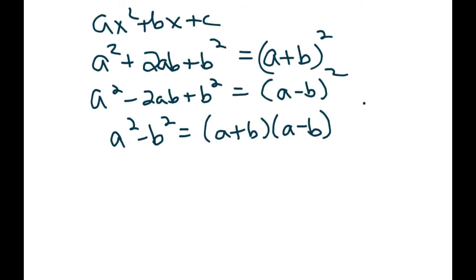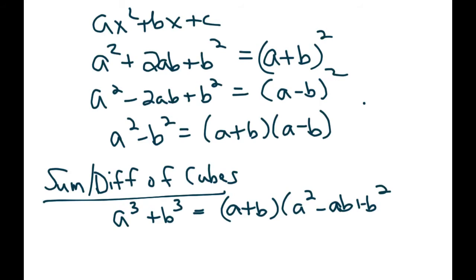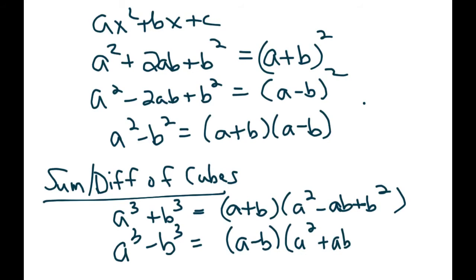Factor by grouping requires four terms — you group the first two terms together and the next two terms together. The new type of factoring is going to be the sum or difference of cubes — something times itself times itself. If you have two terms that are both the cube of something and they're being added, they factor into this form. And I'll just give you this definition because right now I don't think it's one that you'll memorize. If you have the difference of two cubes, it factors into this — in other words, you have to know what a and b are by taking the cube root of a number.